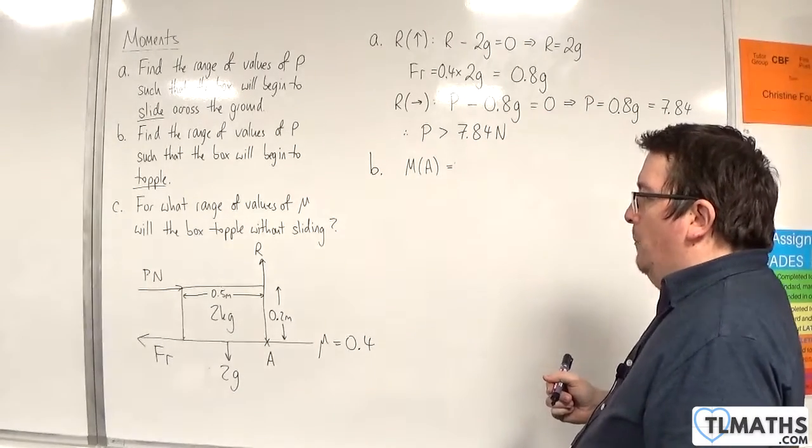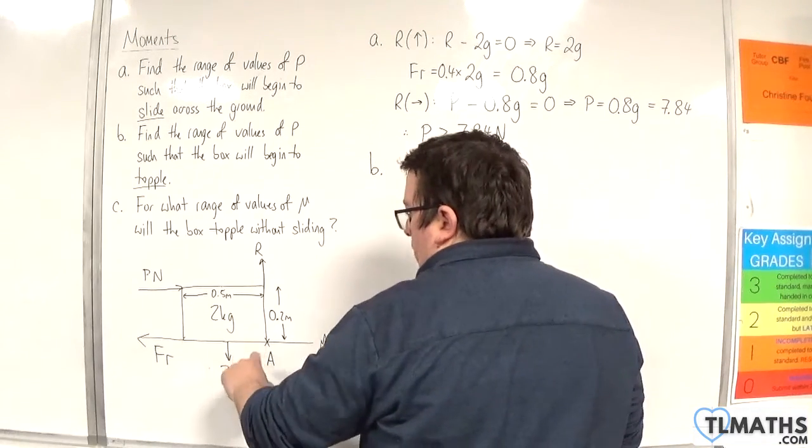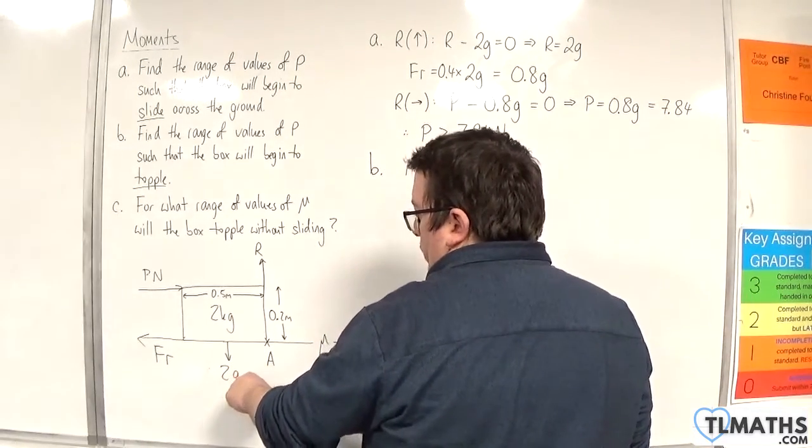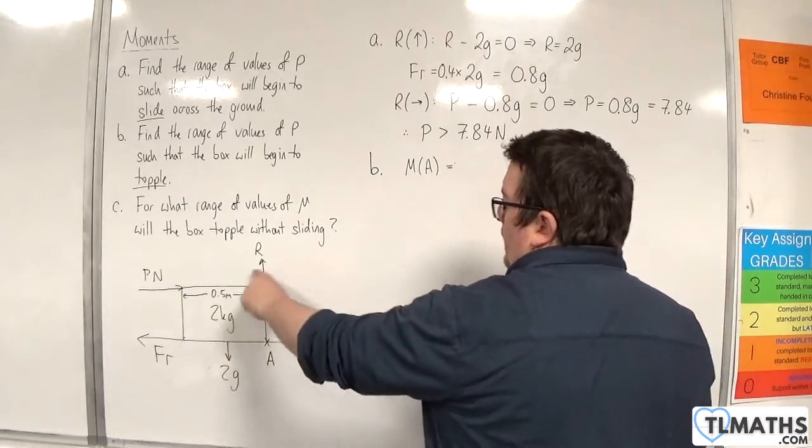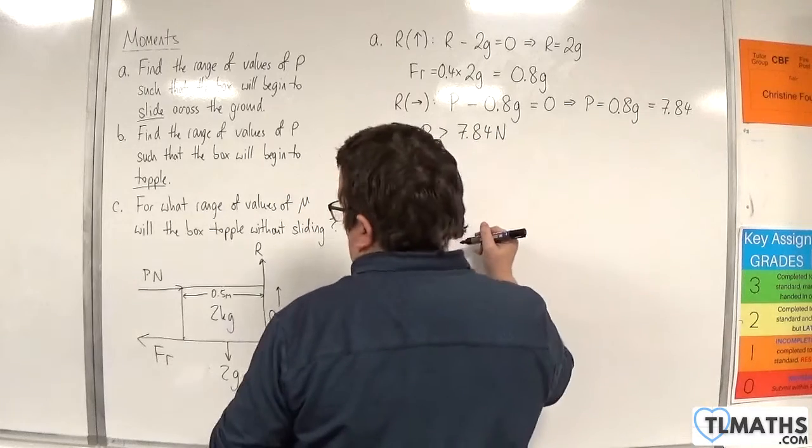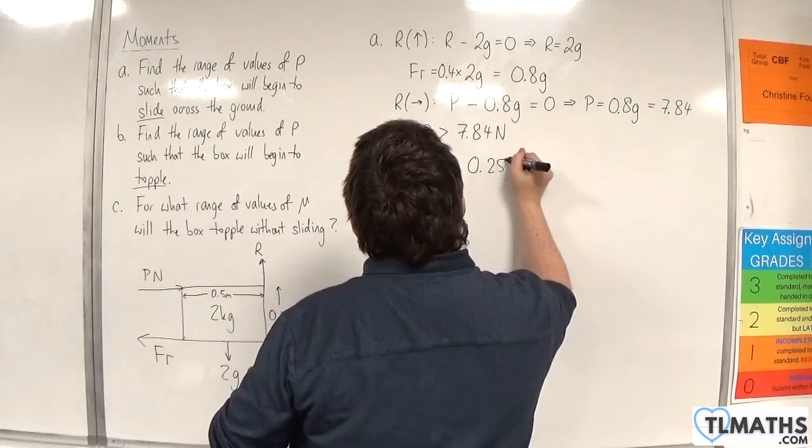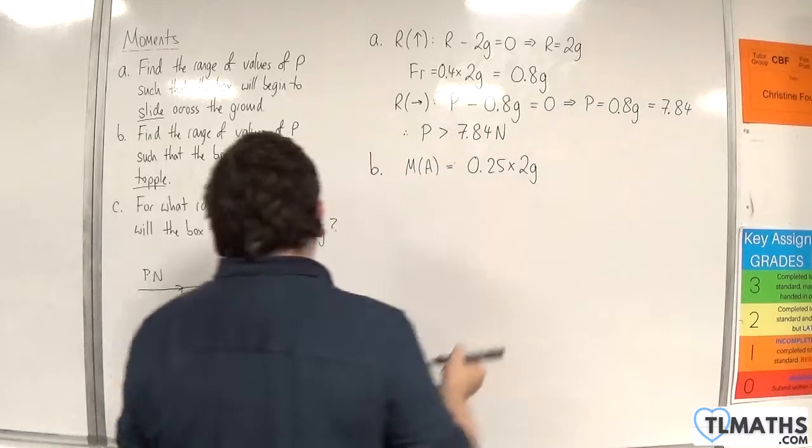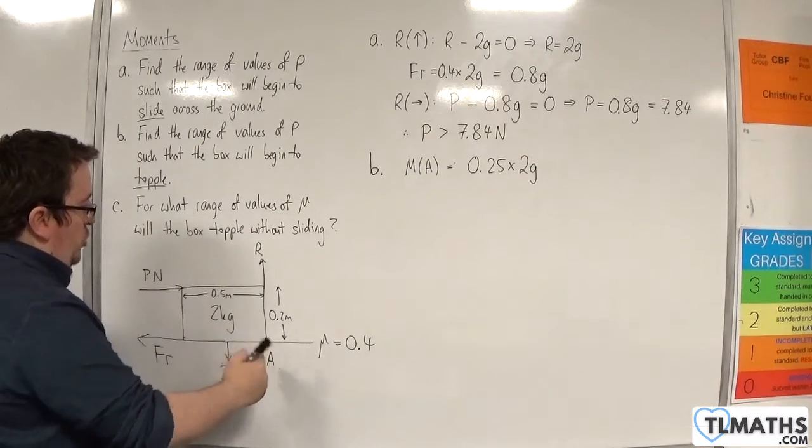What I'll do is I'll take moments about point A. If I take moments about point A, let's work with the 2g force first. We're 0.25 away from 2g, and that's going to be going in an anticlockwise motion. So that's 0.25 times 2g.